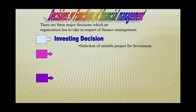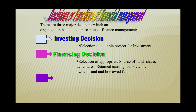The second function is the financing decision. It involves the selection of an appropriate source of funds — that is, owners' fund or borrowed fund. Owners' fund includes shares and retained earnings, while borrowed fund includes debentures, bank loans, or loans from financial institutions. What will be the sources of finance, from where the finance will be obtained for the business activities — that decision is related to the financing decision.